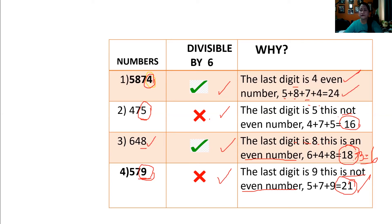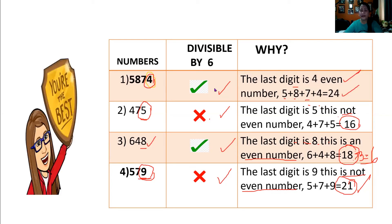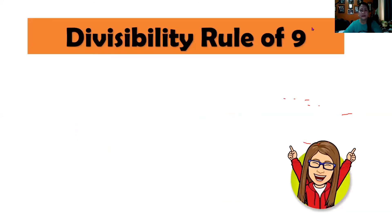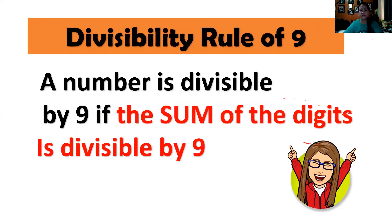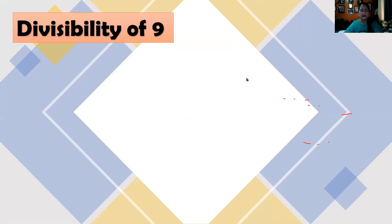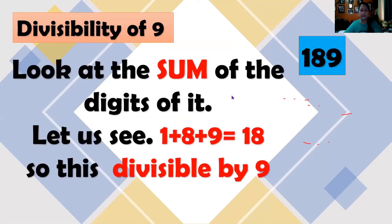Let's go to the divisibility rule of 9. A number is divisible by 9 when the sum of its digits is divisible by 9. Let us see if 189 is divisible by 9: 1 plus 8 is 9, plus 9 is 18. When we divide 18 by 9, the answer is 2, so there is no remainder and it is divisible by 9.